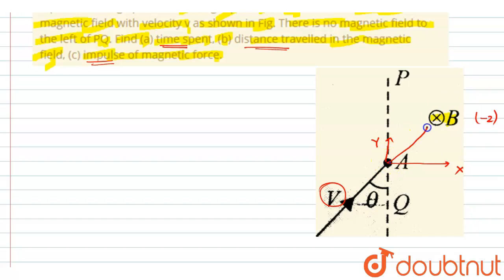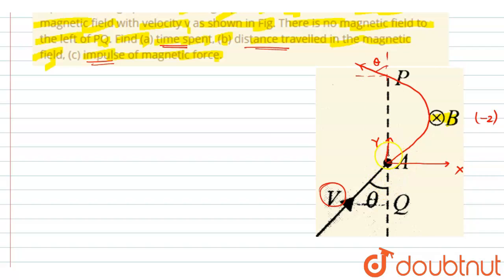The particle will take an exit from the magnetic field at the same angle at which it entered. Hence, it will make an angle of θ with the vertical at exit. The total angle moved by the particle will be θ plus θ, that is 2θ. So, if this is the center, the total angle subtended by the particle would be 2θ.